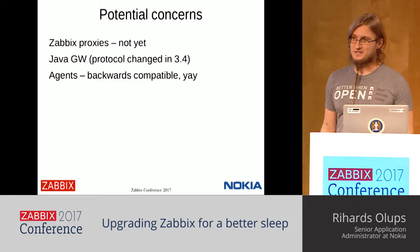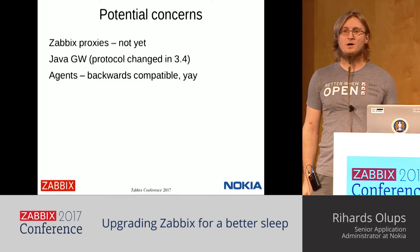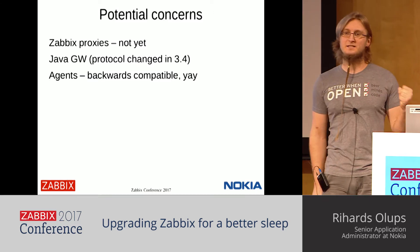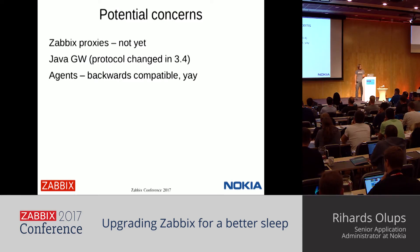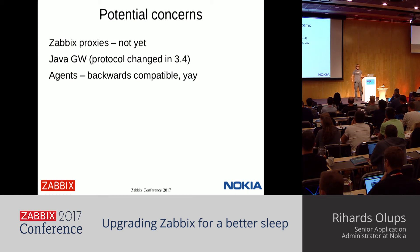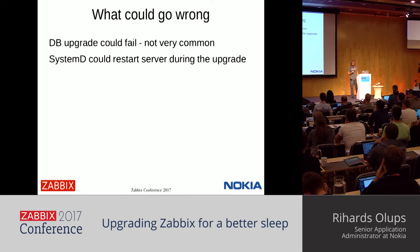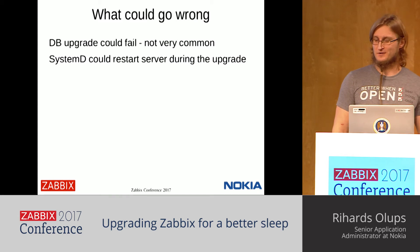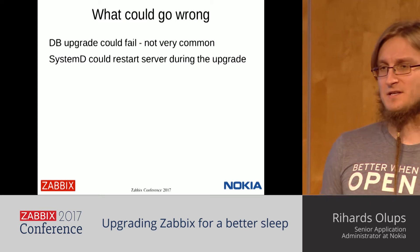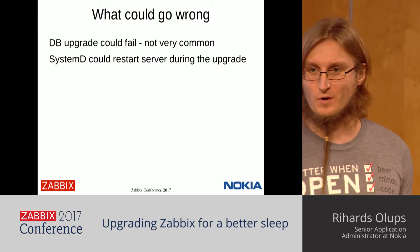Regarding potential compatibility concerns: we don't use Zabbix proxies currently, so that's not an issue. The Zabbix Java gateway protocol hasn't changed since it was created, except it changed in 3.4 — not a big concern since we plan to upgrade the gateway anyway, and there are nice new features in 3.4. Zabbix agents are fully backward compatible down to 1.0, which is a great stress-free upgrade selling point. The database upgrade could potentially fail, but that's not very common — it usually goes smoothly unless you're one of the first adopters. There was also a problem where systemd restarted the Zabbix server during upgrade, leaving a partially broken database.